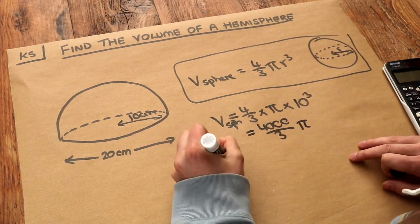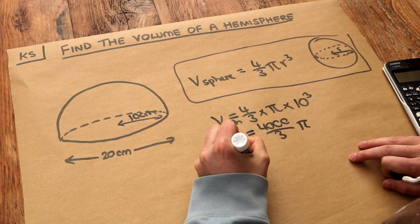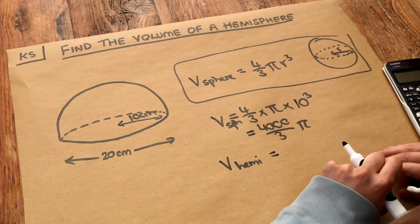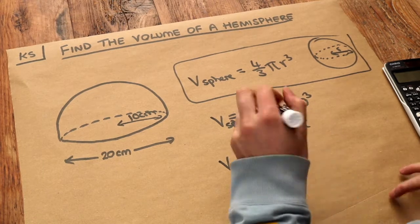But we want the volume just of a hemisphere. Now can you see that if a hemisphere is half a sphere we just need to divide this volume by 2.